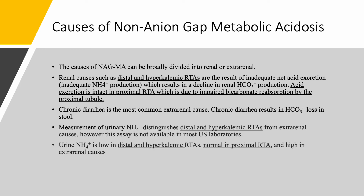Like I said, we have renal causes and extra-renal causes. Renal causes: distal RTA and hyperkalemic RTA have impaired distal acidification, meaning low production of ammonium. In the case of proximal RTA, the problem is you don't have adequate bicarbonate reabsorption, but distal acidification is intact. Production of ammonium is intact, and therefore the patient can acidify their urine and you have a urine anion gap that is negative.